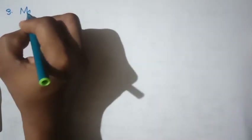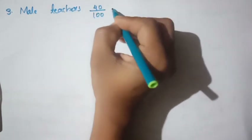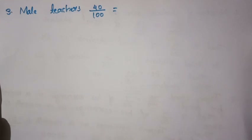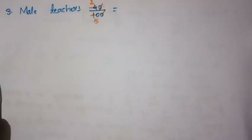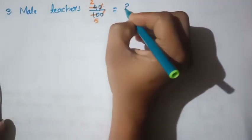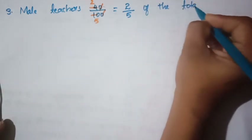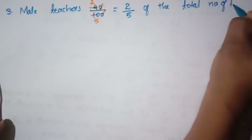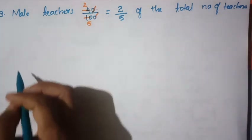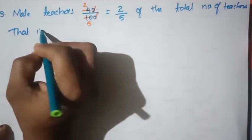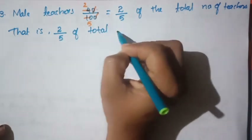Male teachers are 40 by 100 of total. If we cancel it: 2 into 5, that is 2 by 5 of the total number of teachers equals 32.